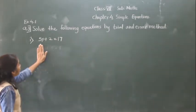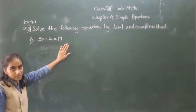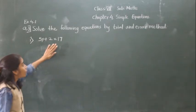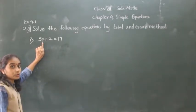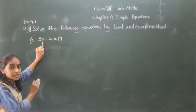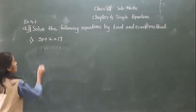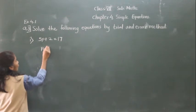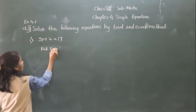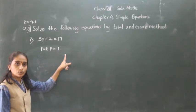In this given equation, 5P plus 2 is equal to 7. We are going to put the value of P and try whether LHS and RHS are equal. So first, put the value of P equal to 1.